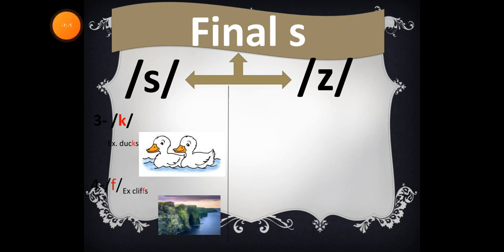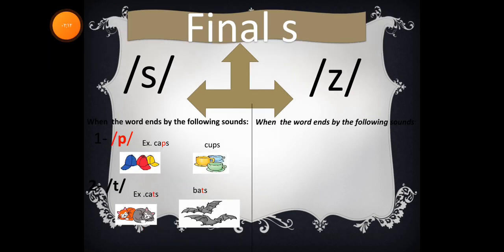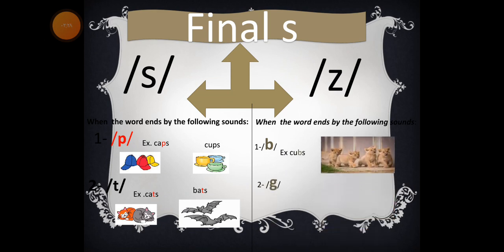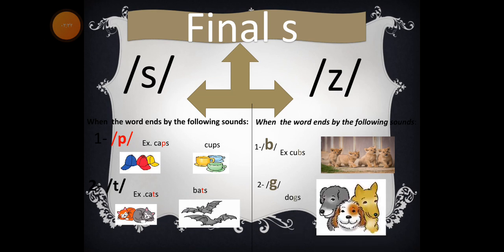Also, final 's' is pronounced like /z/ when the word ends with the following sounds. Number one: the /b/ sound, for example cubs, cubs.